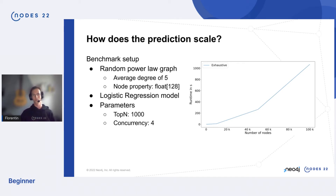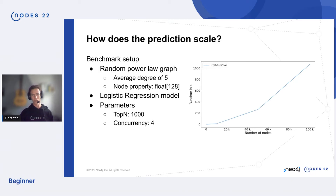Now let's talk about how this naive exhaustive approach actually scales. I built a small benchmark using a random power-law graph — similar to a social network — because the actual data doesn't matter much; it's about node count and prediction speed. The graph uses an average degree of five, meaning each node has five relationships to other nodes.